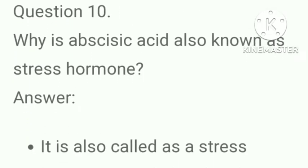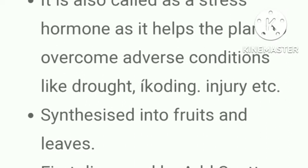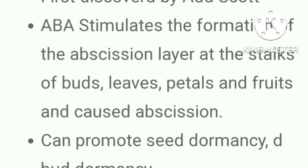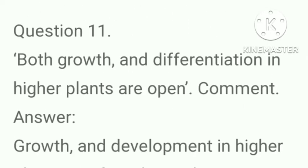Why is abscisic acid also known as stress hormone? Answer: It is called stress hormone as it helps the plant to overcome adverse conditions like drought, flooding, injury etc. Synthesized in fruits and leaves, first discovered by Addicott. ABA stimulates the formation of the abscission layer at the stalks of buds, leaves, petals and fruits and causes abscission.